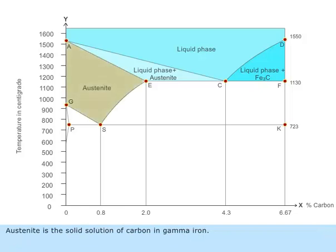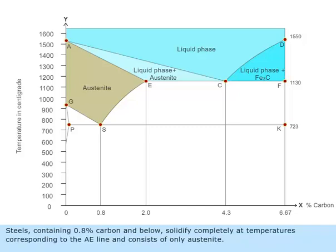Austenite is the solid solution of carbon in gamma iron. Steel solidifies at temperatures along the line AECF. Steels containing 0.8 percentage carbon and below solidify completely at temperatures corresponding to the AE line and consist of only austenite.